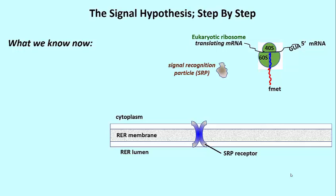There is a particle in the cytoplasm that actually recognizes the signal peptide as it emerges from a ribosome shown here. It is called the signal recognition particle or SRP.